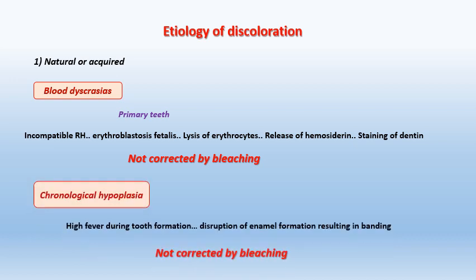The last type in the natural or acquired causes is chronological hypoplasia. It occurs as a result of high fever during tooth formation. This high fever leads to temporary disruption in enamel formation, resulting in banding in the enamel — and also, this cannot be corrected by bleaching.